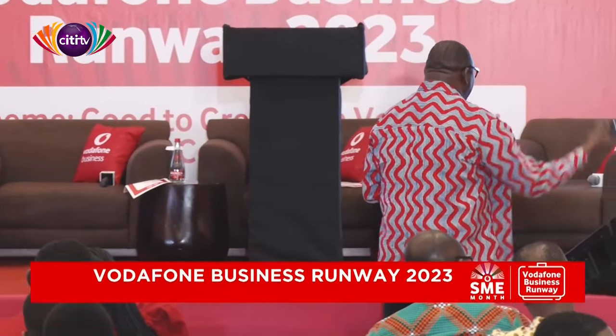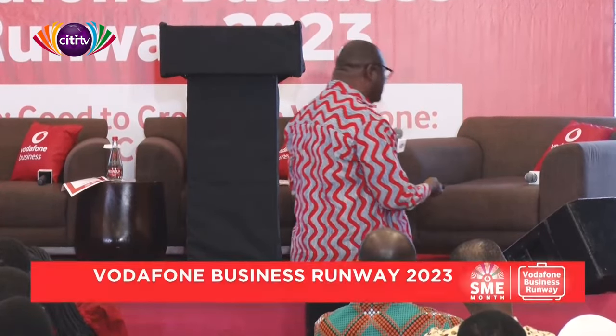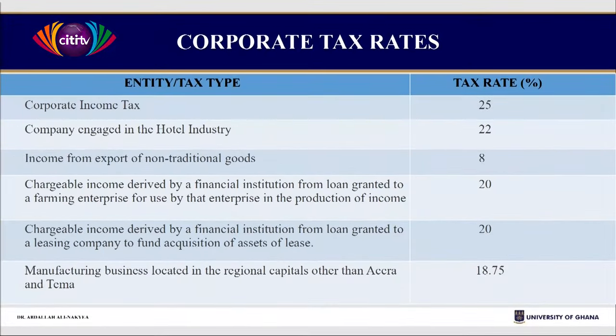The question is: our shops, the shelves, the tables, the laptops, the computers — are we claiming the capital allowance to reduce our tax? That is why I'm saying you determine your tax liability. When you realize an asset or a liability, you make a loss — you get a deduction. If you gain, you pay tax. Financial cost is also allowed as a deduction.